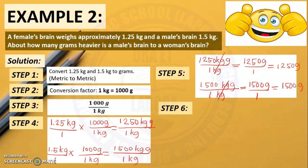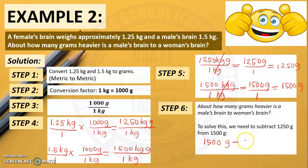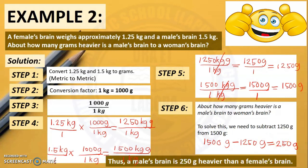Step 6: We need to answer the problem. The question is about how many grams heavier is a male's brain than a female's brain. To solve this, we subtract 1,250 grams from 1,500 grams. 1,500 grams minus 1,250 grams equals 250 grams. Thus, a male's brain is 250 grams heavier than a female's brain.